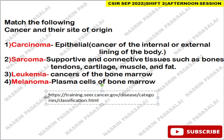Next: match the cancer with its site of origin. Carcinoma is a cancer originating from epithelial tissue — it occurs in the internal and external lining of the body. Sarcoma is a cancer originating from supportive and connective tissues such as bones, tendons, cartilage, muscle, and fat. Leukemia is a cancer of the bone marrow. Melanoma — note you may confuse leukemia and melanoma, but the correct answer is as given.